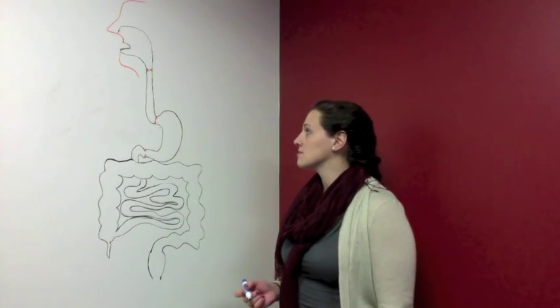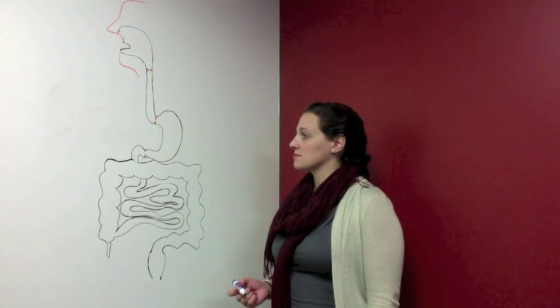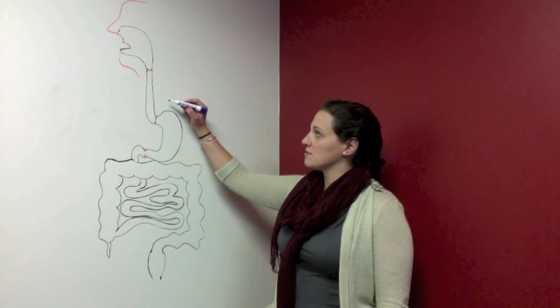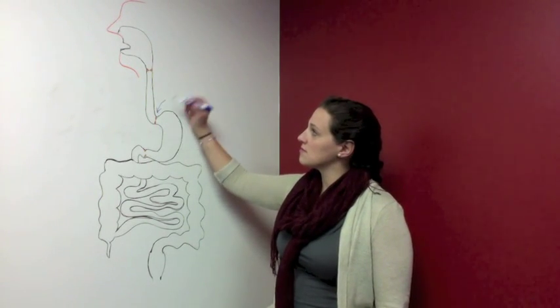Next, we will describe the process of vomiting. The process of vomiting occurs by the following steps. First, there is vagally mediated relaxation of the stomach and the lower esophageal sphincter, the LES.